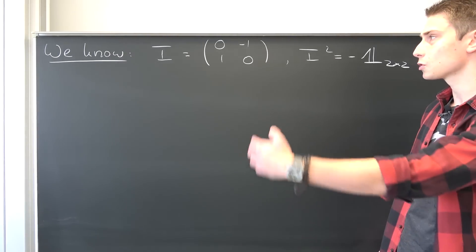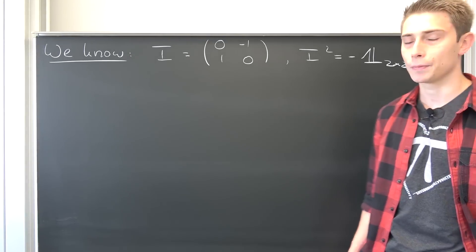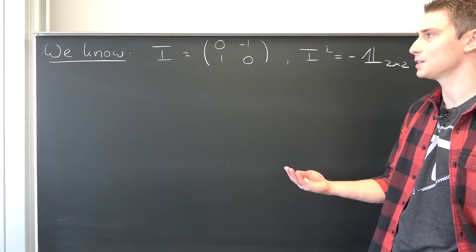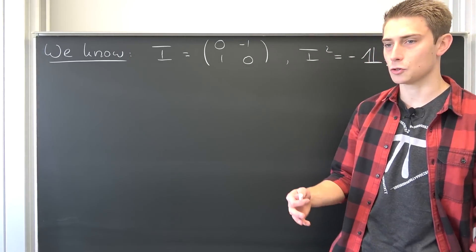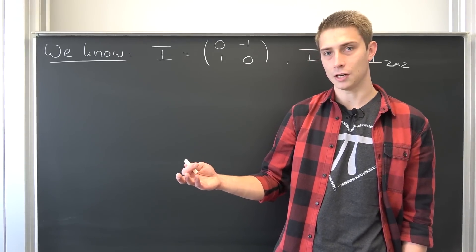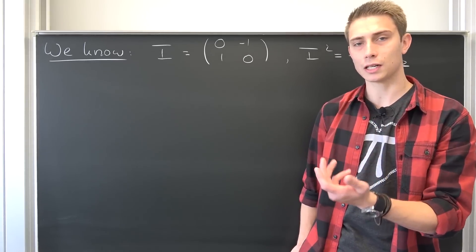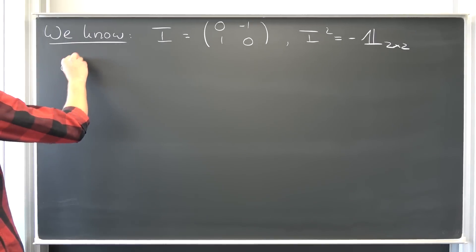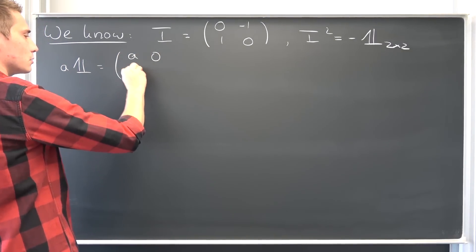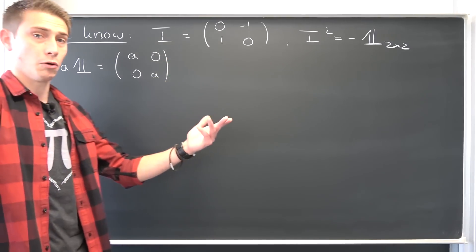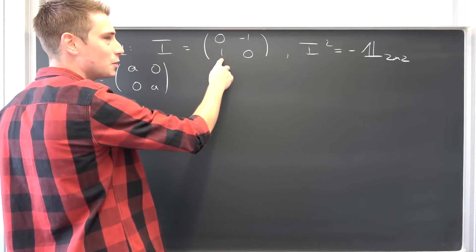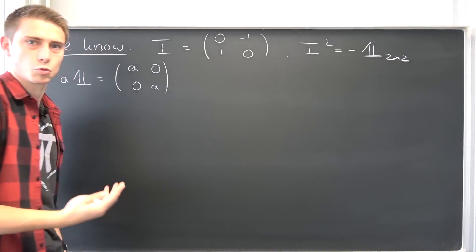We are going to construct ourselves generalized complex numbers now. We are going to use the property that we can do a pointwise addition on matrices. Continuing from last video: we can construct real numbers in matrix form — namely a times the identity matrix in two dimensions equals [a, 0; 0, a].